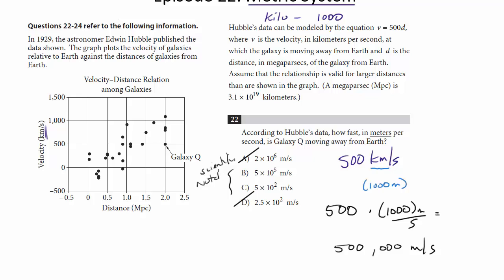And notice in order to convert this into scientific notation, we put our decimal point here. We count across one, two, three, four, five. So this would be five times 10 to the five, which is choice B and the answer.